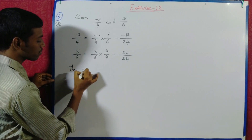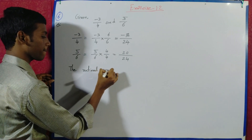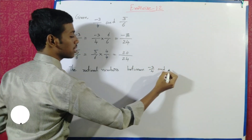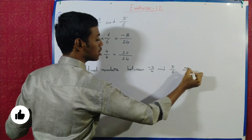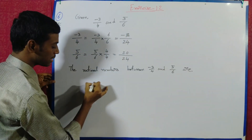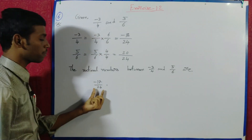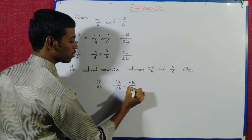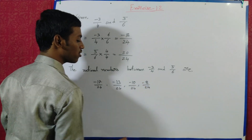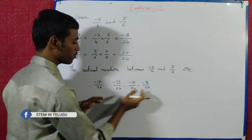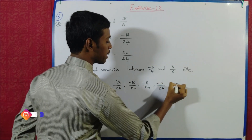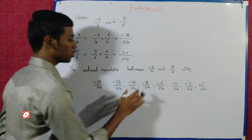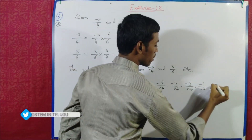The rational numbers between minus 18 by 24 and 20 by 24 are: minus 17 by 24, minus 13 by 24, minus 10 by 24, minus 8 by 24, minus 6 by 24, minus 4 by 24, minus 3 by 24, minus 1 by 24.